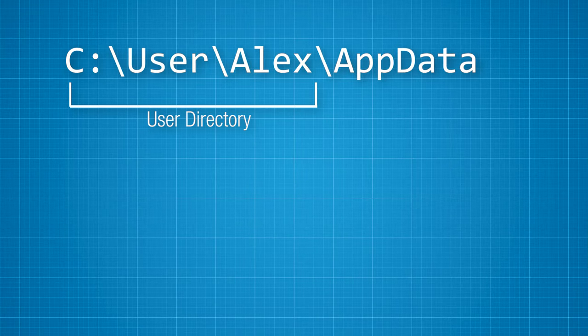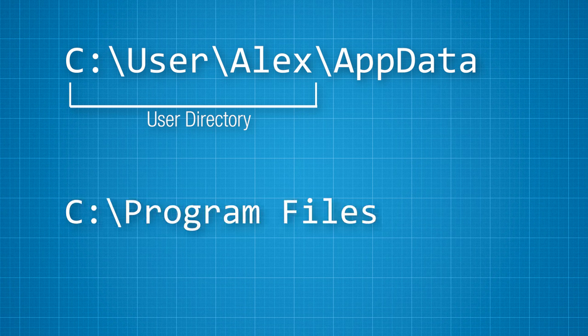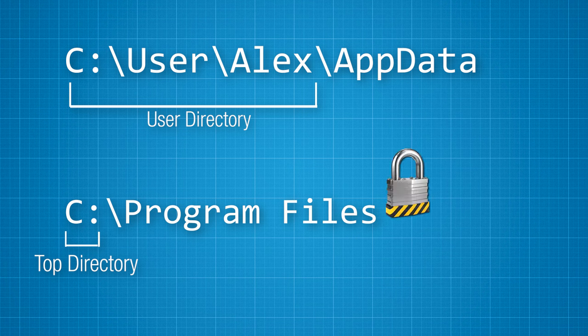Permissions are also different for the user directory and the Program Files directory. AppData is within each user's personal directory, so they have access to it. But Program Files is higher up at the top-level directory, because it has programs meant to be used by all users. Only someone with admin privileges can write to Program Files, so if settings were stored there, users might run into permission issues if they aren't admins. So it makes way more sense to just keep everyone's settings in their own folder.